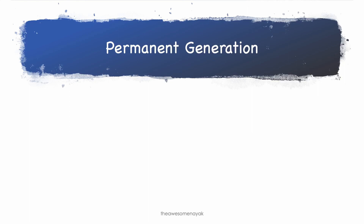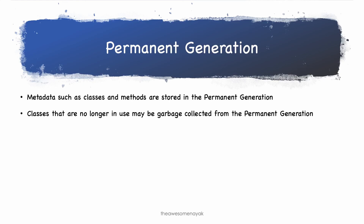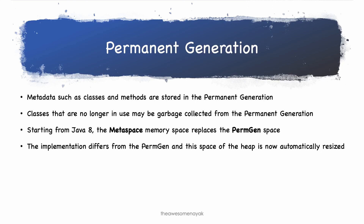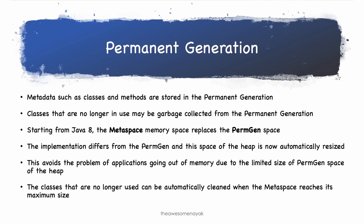The permanent generation, or permgen, is a special heap space separated from the main heap area that contains the young and old generations. The JVM keeps track of loaded class metadata in the permgen. It also stores all the static content in this space, such as all the static methods, primitive variables, and references to the static objects. When classes are unloaded or no longer used, they can be garbage collected from the permgen space. However, there is an upper limit to the size of the permgen space, and with its limited memory, permgen was involved in generating the infamous out-of-memory error. Due to this, it was completely removed in JDK 8 and replaced with the metaspace. Unlike permgen, metaspace can automatically resize the heap space and grow as needed, helping avoid out-of-memory errors. The garbage collector can also now automatically trigger the cleaning of dead classes once the class metadata usage reaches its maximum metaspace size.